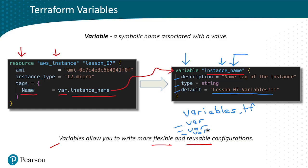We can keep adding variable blocks and have as many variables as we want. Within our resource we can call on those variables with additional var references — for the AMI, for the instance type, and whatever else. The whole idea is that any variable information is stored in variables.tf or another file, kept separate from our main infrastructure code.